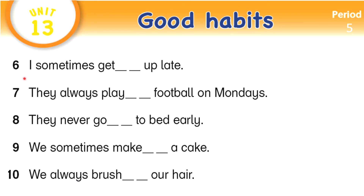Now check your answers. Number six: I sometimes get up late. We don't add anything to the verb because the subject is I. Number seven: they always play football on Mondays. We don't add anything because the subject is they. Number eight: they never go to bed early. We don't add anything to the verb because the subject is they.